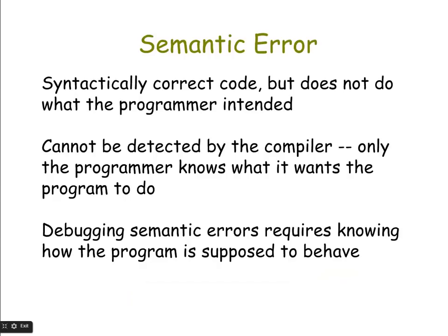Semantic errors involve syntactically correct code — blocks that are snapped together just fine — but they don't do what the programmer intended. Semantic errors can't be detected by the compiler because only the programmer knows what the program is supposed to do. This is why it's important to go through the planning process and think about what your events are, what's supposed to happen during each event, and what interface components will trigger those events.